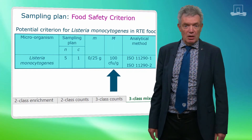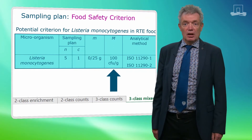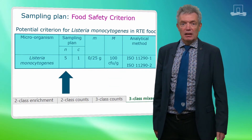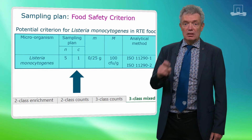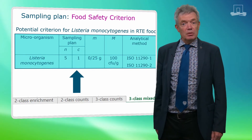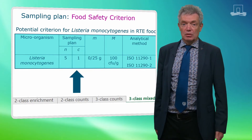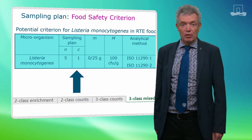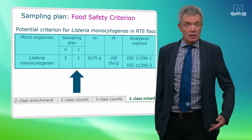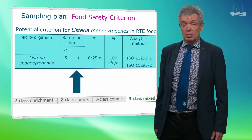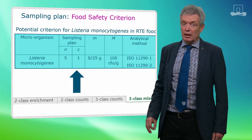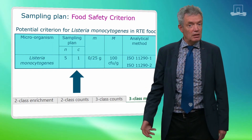This table is an example of a three-class mixed plan. To test for the small m limit, five samples need to be taken and enriched and only one is allowed to be positive. For the big M, that positive sample should also be counted to determine if the concentration is above 100 CFU per gram, since in an enrichment we only know that there is at least one culturable cell, but it could also be ten, or hundred, or thousand, or even a million — they all result in a positive in an enrichment.